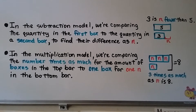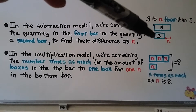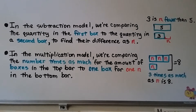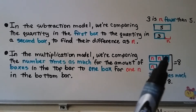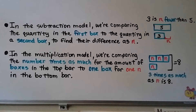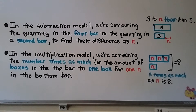In the subtraction model, we compare the quantity in the first box to the quantity in the second box to find their difference n — like 'three is n fewer than five.' In the multiplication model, we compare how many times as much: if it's three times as much, we have three boxes in the top bar compared to one box for n in the bottom bar.